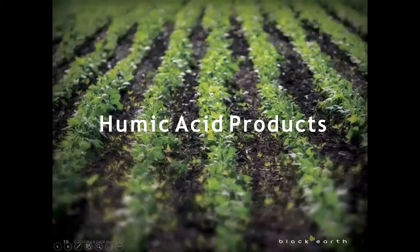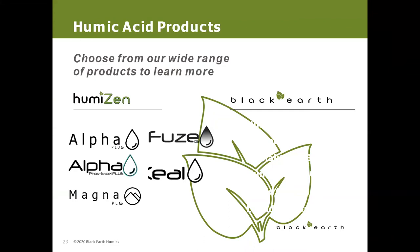Now let's talk about the products. Black Earth has a wide range of Canadian-made products designed for everything from agriculture to industrial applications. Black Earth is committed to science and testing so that we no longer have to choose between responsible environmental stewardship and the bottom line. Black Earth products are available in various forms including granular, liquids, and dry solubles, with several variations of coarseness and concentration for different applications, rates, and methods.